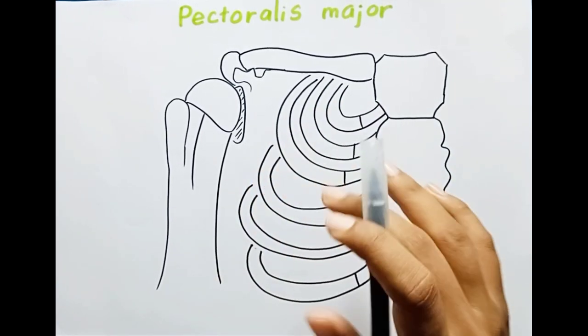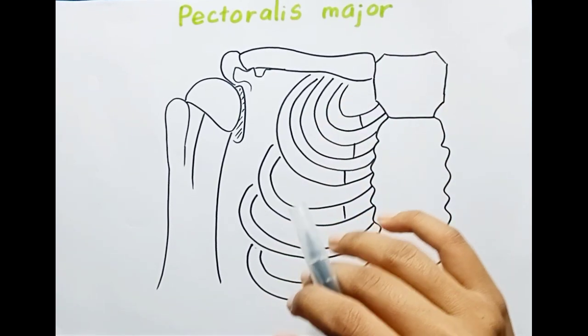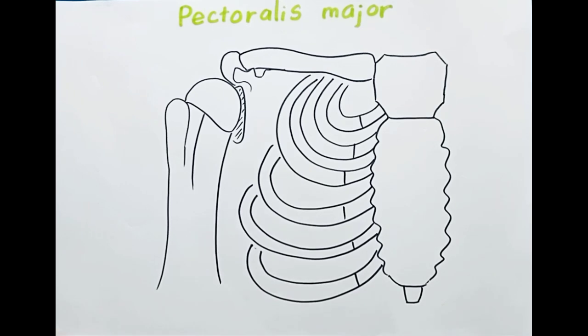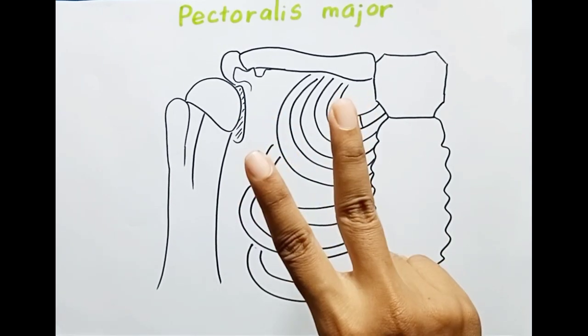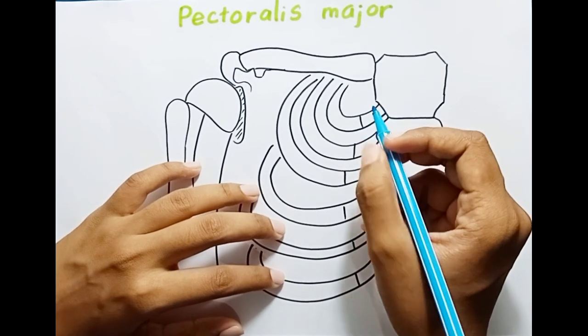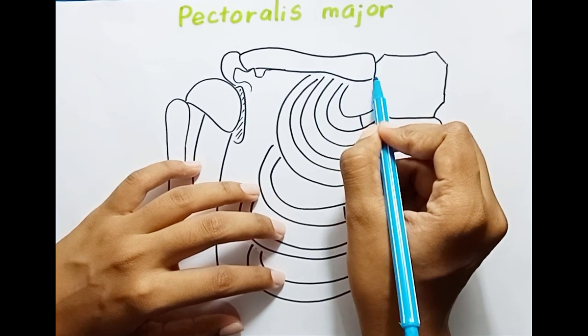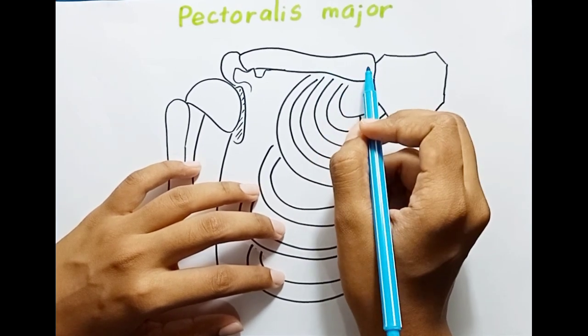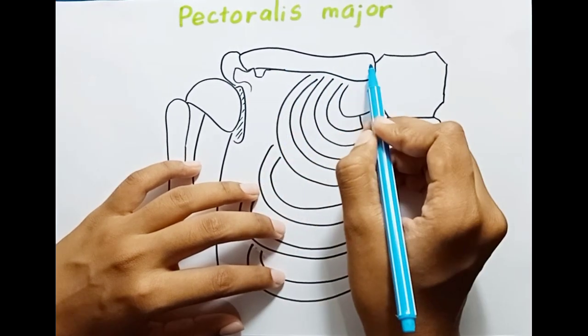First, we will talk about the proximal attachments of the pectoralis major muscle. There are two heads of origin of this muscle: the clavicular head and the sternocostal head. The clavicular head arises from the anterior surface, that means the front surface, of the medial half of the clavicle.